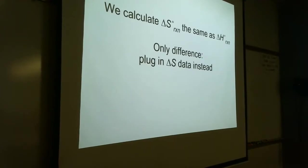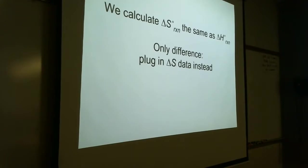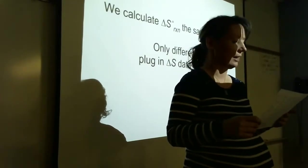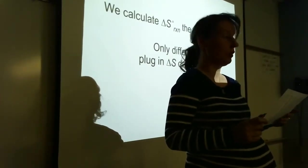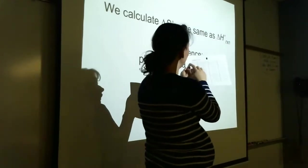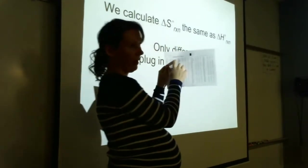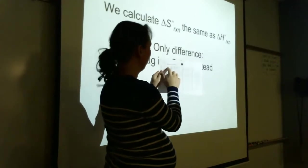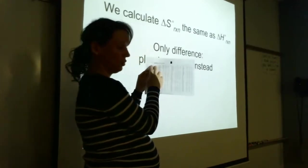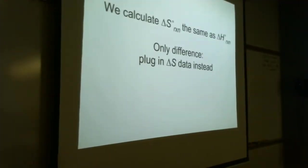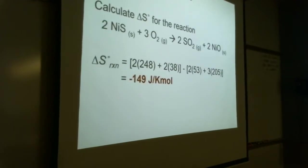Now we're going to calculate delta S. What does S stand for? Entropy. We're going to calculate delta S for the reaction the same way as delta H, except now we're plugging in delta S data. One really important thing to point out: the units of delta H are in kilojoules per mole, while the units of delta S are in joules per mole Kelvin — it has the temperature component in there as well. So make a note that one reference table is in joules, one is in kilojoules — that's going to be important later on.